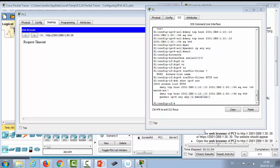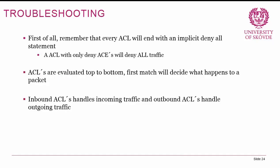Some troubleshooting reminders: every ACL ends with an implicit deny unless you add 'permit ip any any', so an ACL with only deny statements will deny all traffic. ACLs are always evaluated top to bottom — the first match decides what happens to a packet, and subsequent rules are ignored. A 'deny any any' rule at the top will deny everything regardless of permit statements below. Use 'show ip' or 'show ipv6 access-list' to see your rules and which ones matched.